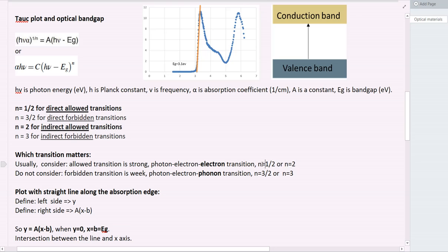Here, n is equal to 1/2 or 2. But we also have the forbidden transition. It's not widely used because forbidden transition is very weak. Usually, it has to have the phonon energy to assist the transition. Here, phonon is really about heat.